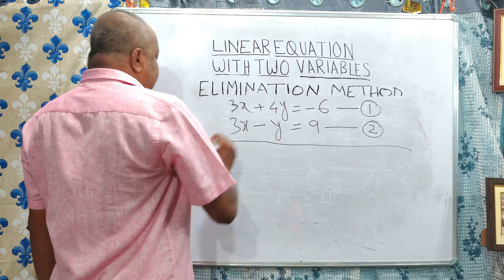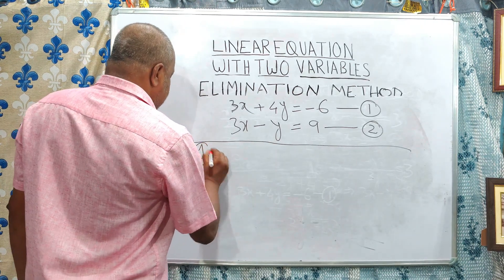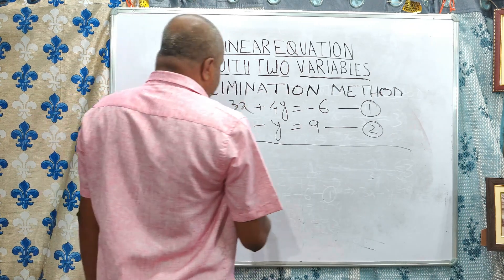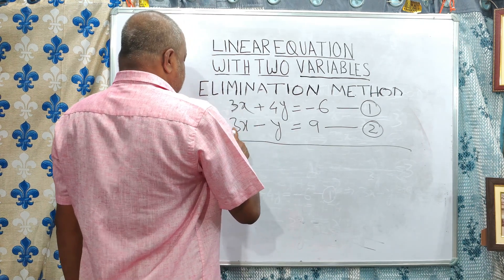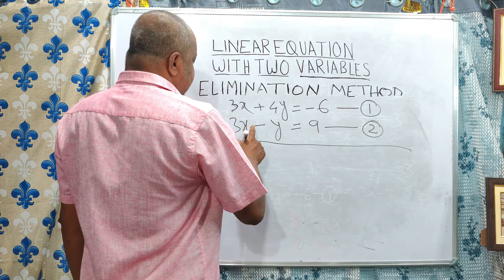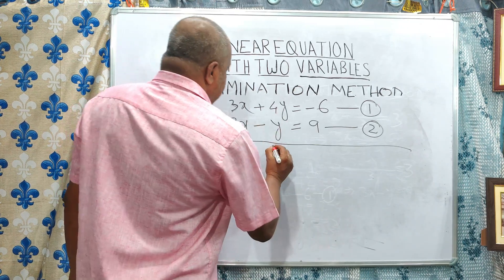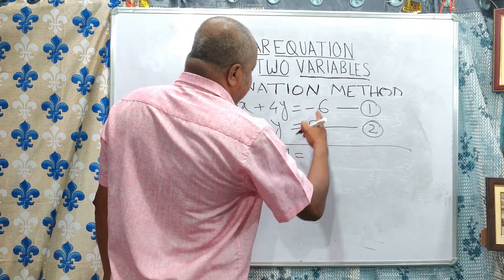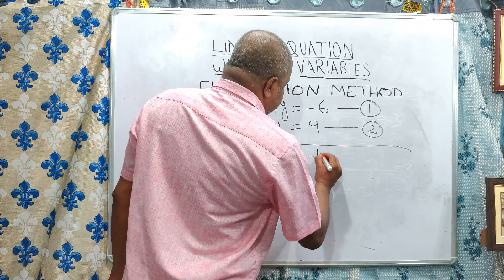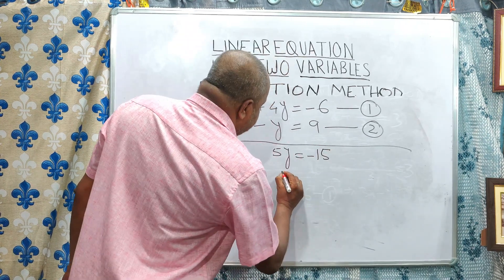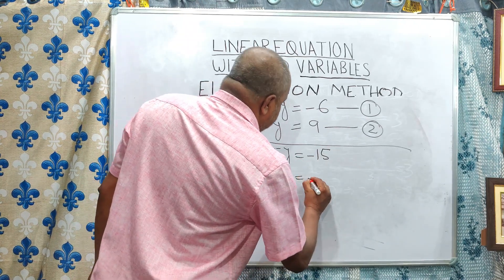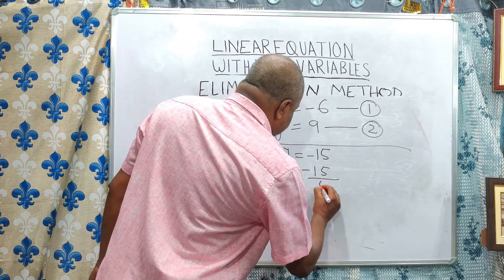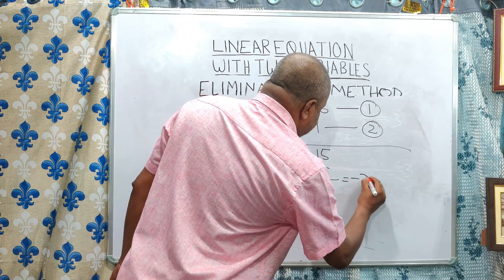So performing equation 1 minus equation 2: the x terms cancel to 0. Then plus 4y minus minus y gives 5y. And minus 6 minus 9 gives minus 15. So 5y is equal to minus 15, and y is equal to minus 15 by 5, which equals minus 3.